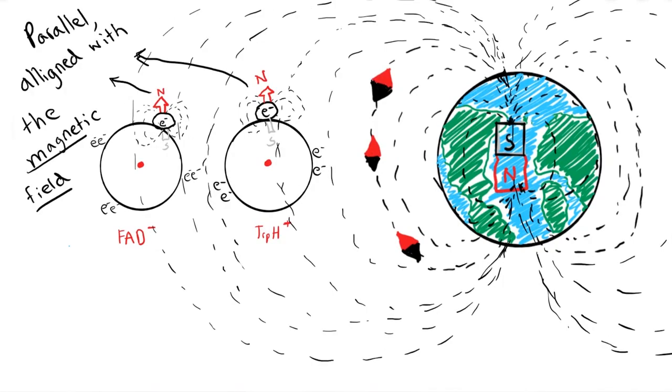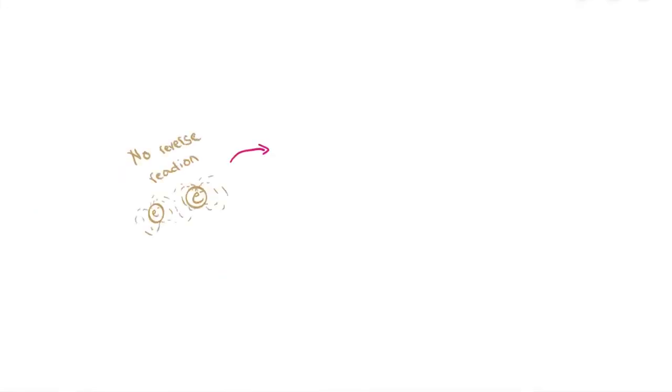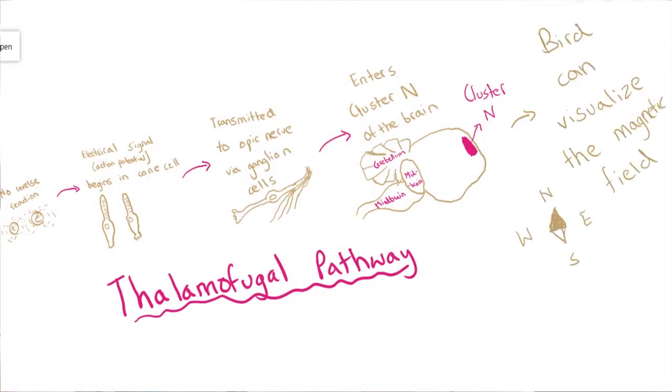However, this alignment only lasts for less than one microsecond and depends on the strength and direction of the magnetic field. But in that tiny amount of time, it prevents the electron on FAD negative to jump back to TRIPH positive because the two electrons don't have opposite spins necessary for a Lewis pair. Because this electron alignment prevents the electron from going back, it triggers a different chemical reaction which causes an electric signal to travel down the optic nerve of the bird into a part of its brain called cluster M. Here the signal is processed and the bird is able to visualize the magnetic field lines of the Earth.